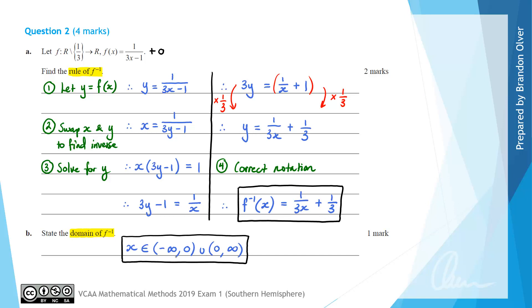Before I move off this slide, some of you may be saying it's easier to write x is an element of all real numbers excluding 0. You'd be absolutely correct that that is an alternate way to write the domain of the inverse function.